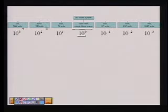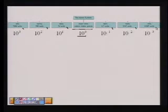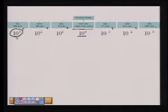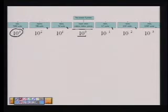then deca, deci, centi, and milli. For an example, ten cubed is the kilo prefix, and it means 1,000, and so there are 1,000 meters in a kilometer.